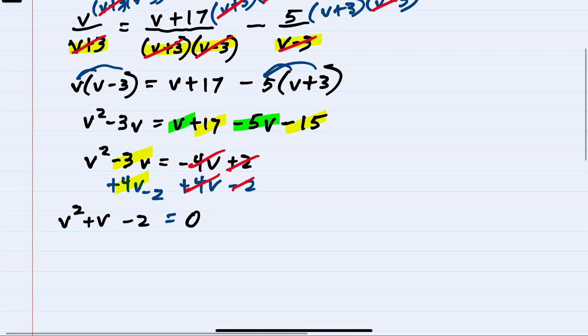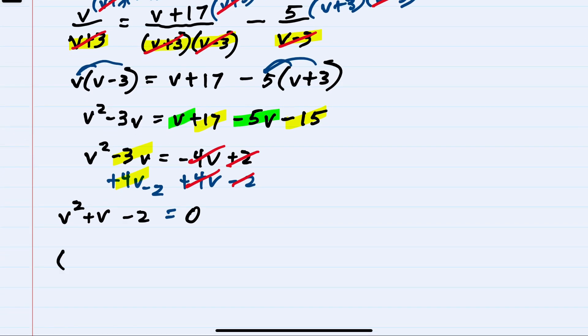This gives me a quadratic that I can factor. The only possibility for V squared is V and V. The only possibility for two is one and two. To multiply to get a negative two, they would have to be different signs. Since I want a positive one V, I'll make that a positive two and a negative one. Now that we factored, these two multiply to be zero, meaning that either the first is equal to zero or the second is equal to zero.